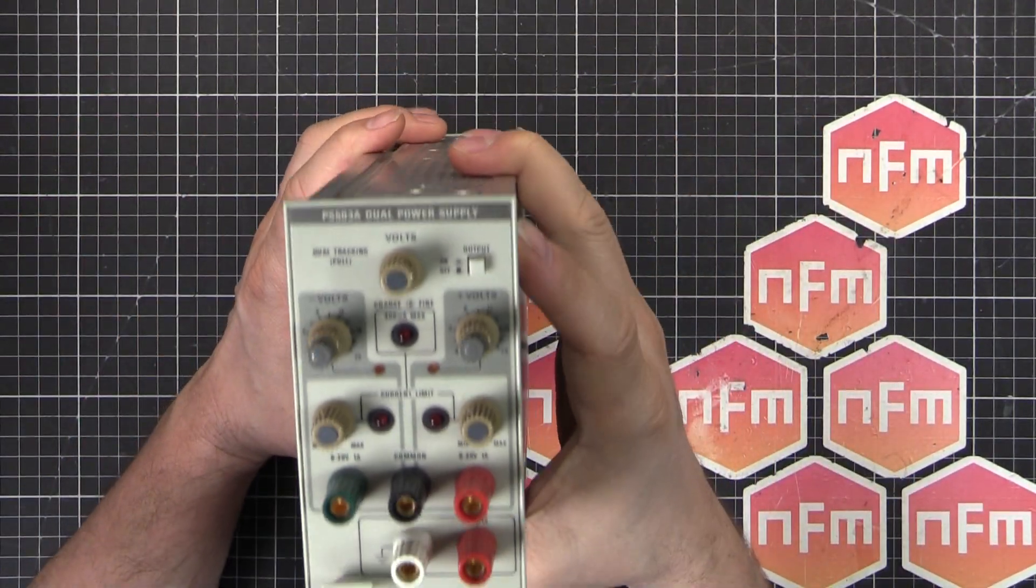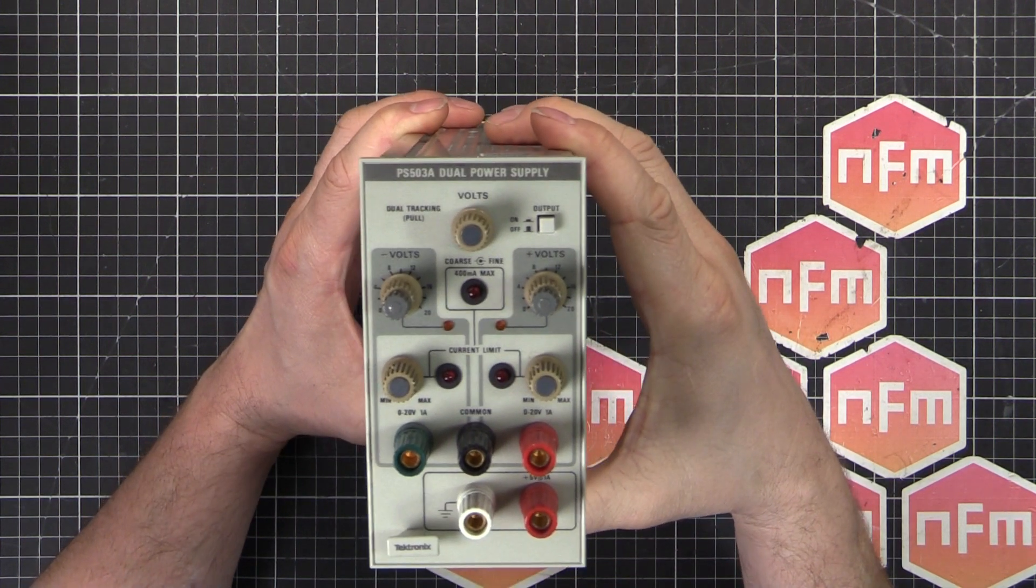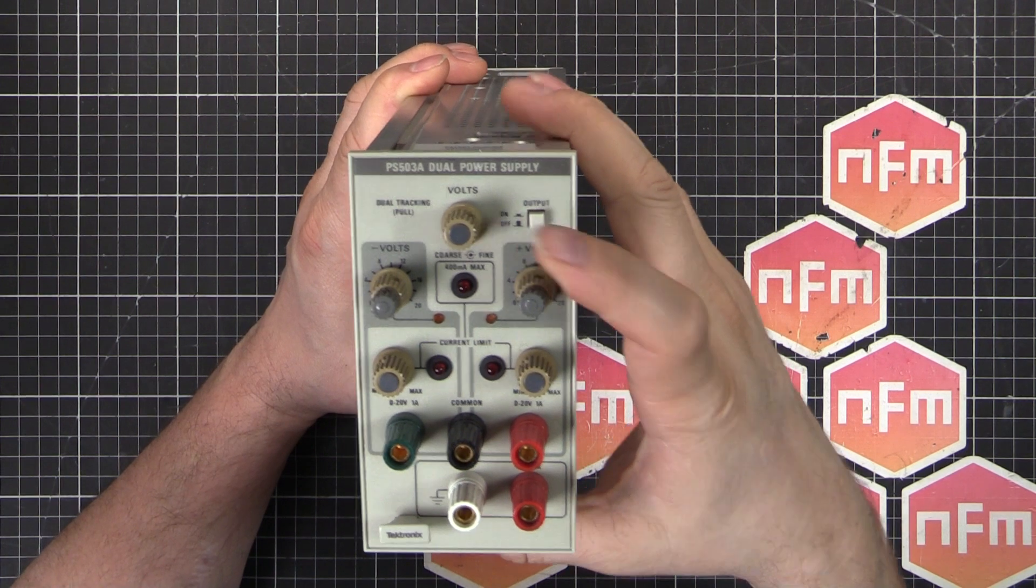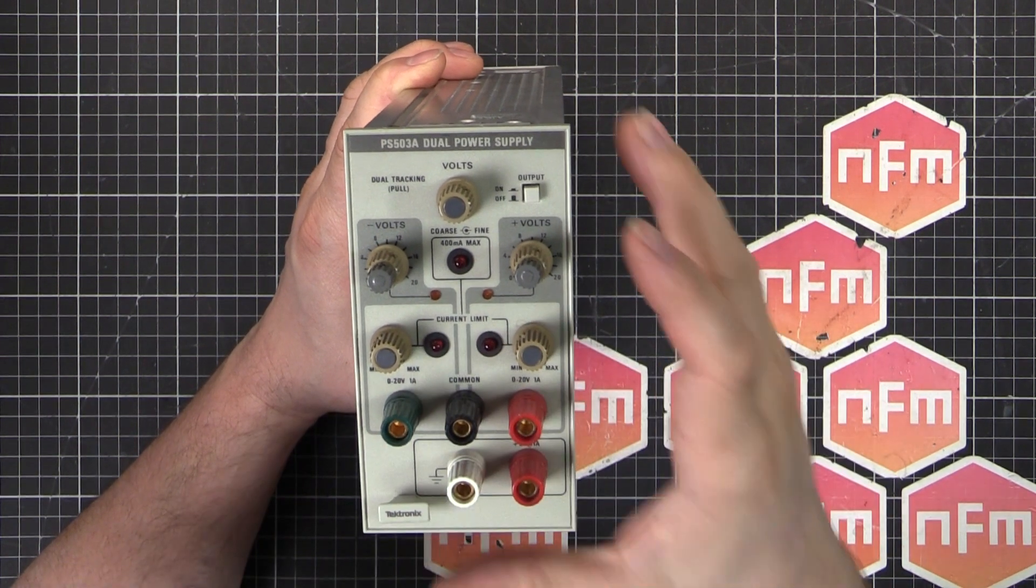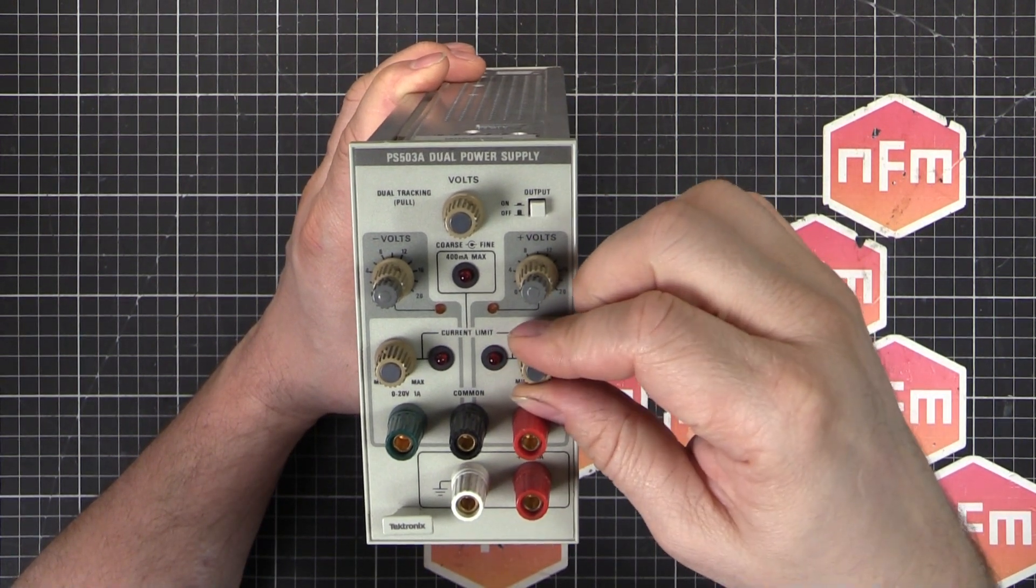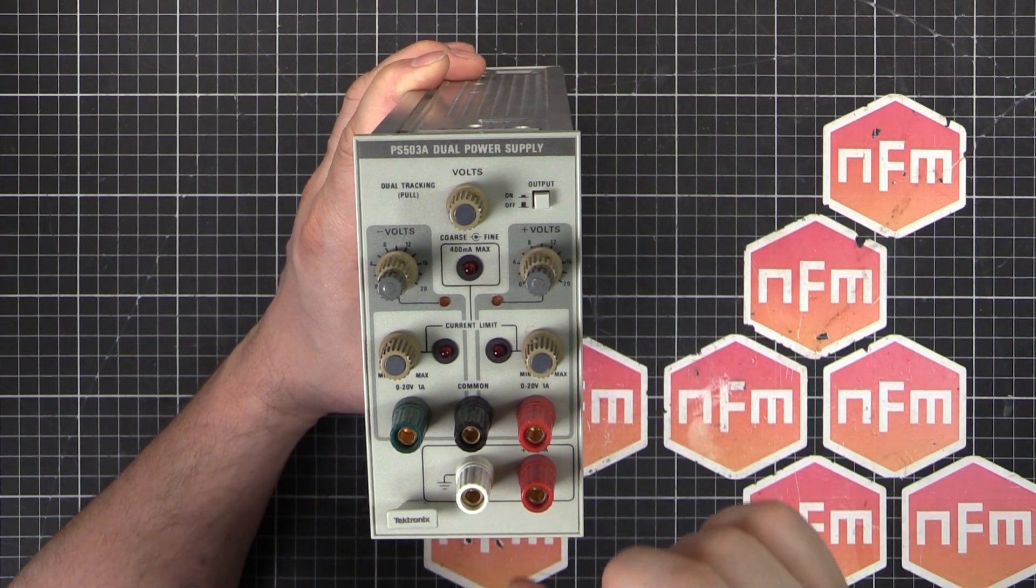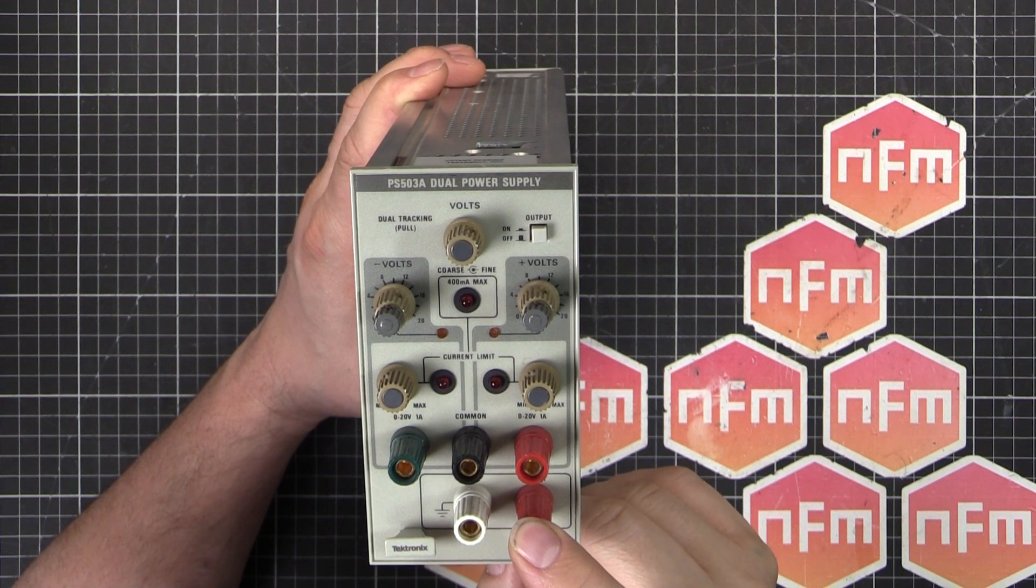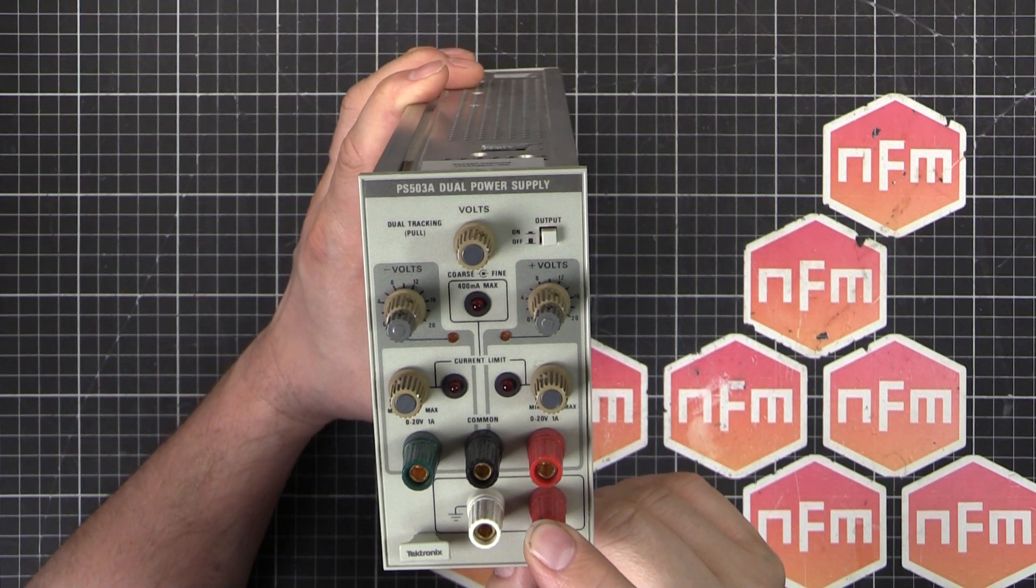So this one is the PS5038 dual power supply. It gives us dual output, fully adjustable from 0 to 20 volts. It's got negative and positive 20 volts at 1 amp, current limited as well and dual tracking and it's also got a bonus 5 volt 1 amp power supply. So it's kind of a triple power supply but dual power supply for the adjustable side.